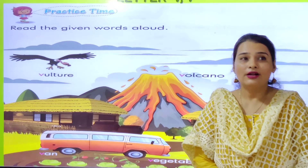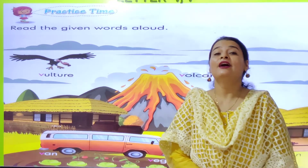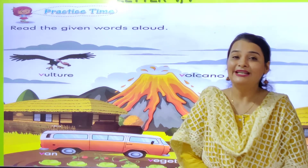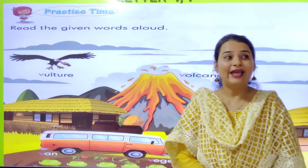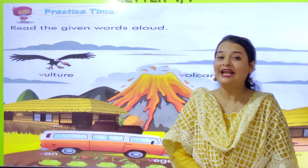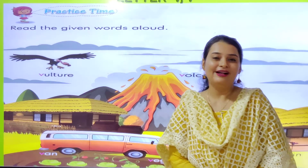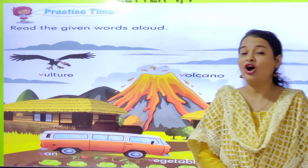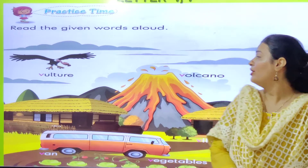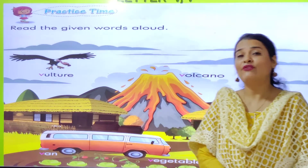So onion, potato, cabbage, beetroot, brinjal, ladyfinger — all are vegetables. So V for vegetables. Then V for volcano. Yes, volcano — kya hota hai? Mountain hota hai na? Us mein se jab aag nikalti hai, to usay volcano bolte hai.